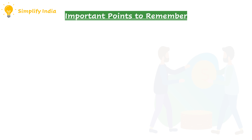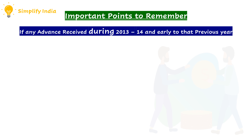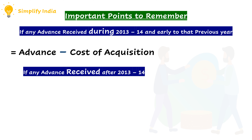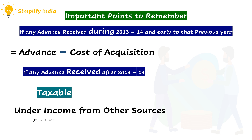In case of advance money: if advance money is received and forfeited during the year 2013-14 or earlier, such money should be subtracted from the cost of acquisition. Whereas, if any advance money is received and forfeited after the year 2013-14, such amount has to be taxed under income from other sources and will not be deducted from the cost of acquisition.